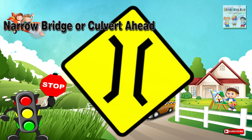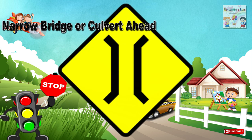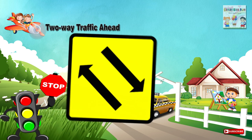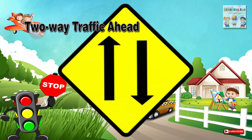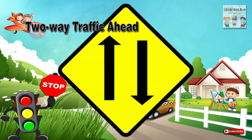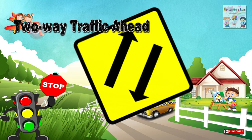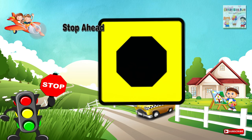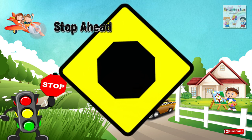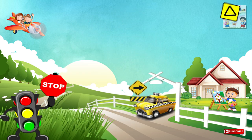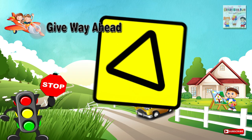Twenty-one: Narrow bridge or culvert ahead — a place ahead where there is a narrow bridge or culvert. Twenty-two: Two-way traffic ahead — a section of road ahead, temporarily or permanently, carrying two-way traffic on the same carriageway. Twenty-three: Stop ahead — a place on a minor road ahead where traffic has to stop and give priority to traffic on the major road it intersects or meets, according to Regulation 10.